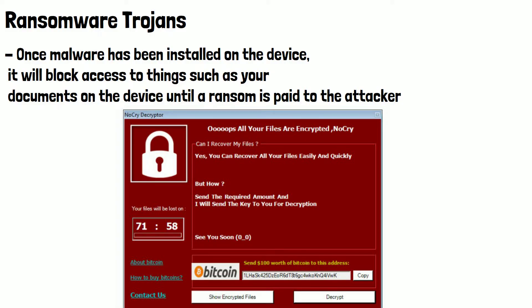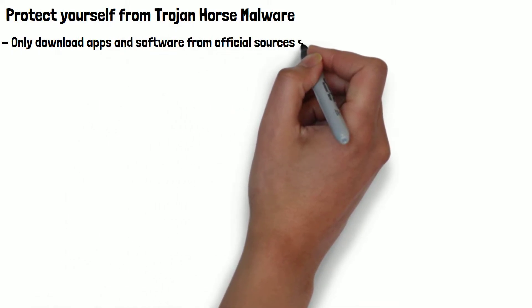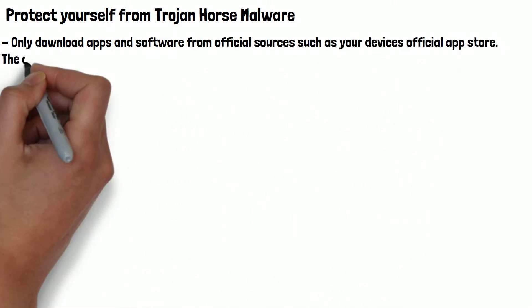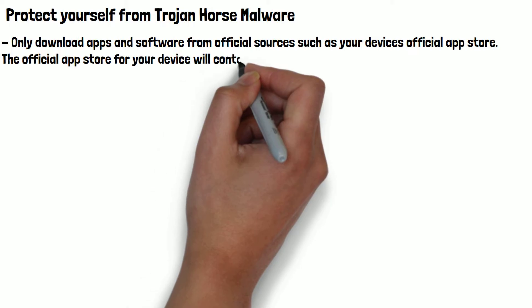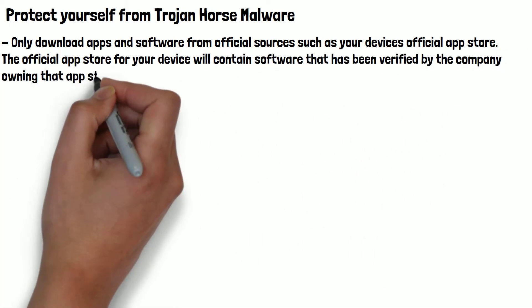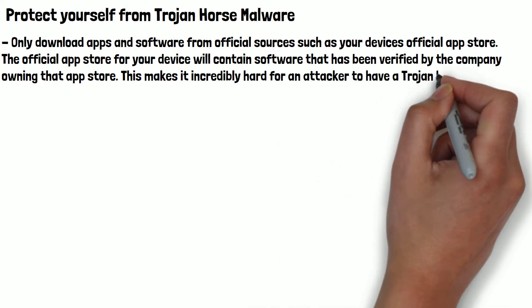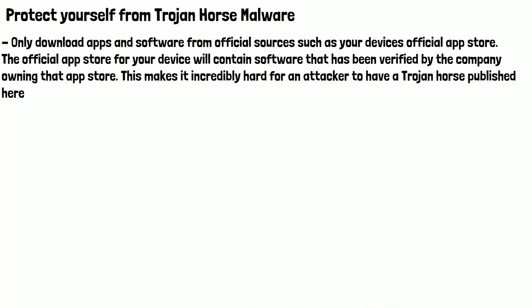So now we understand what Trojan horse malware is, how do we protect ourselves from it? The easiest way is to only download apps and software from official sources, such as your device's official app store. The official app store will contain software that has been verified by the company owning the app store, making it incredibly hard for an attacker to have a Trojan horse published there.